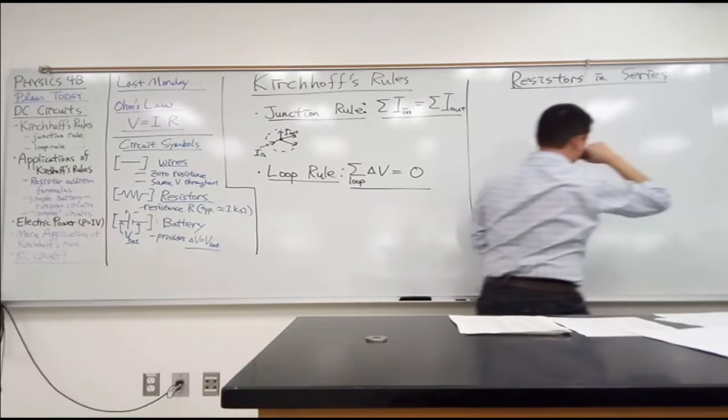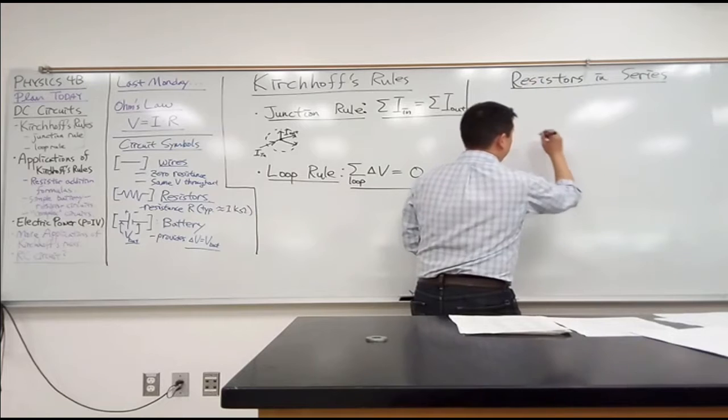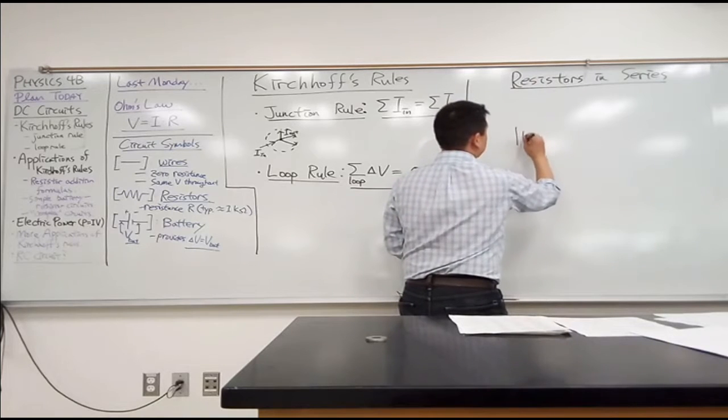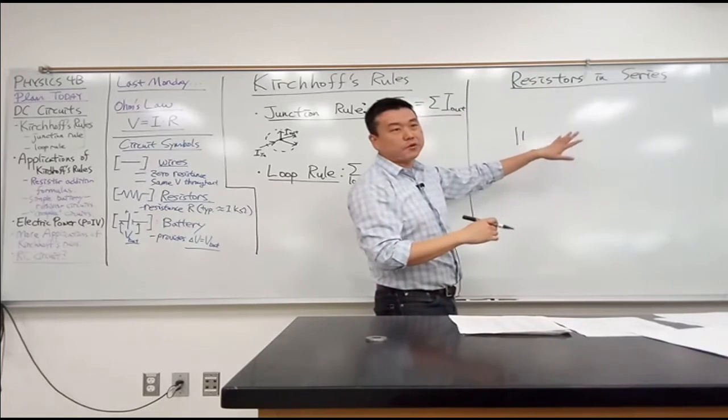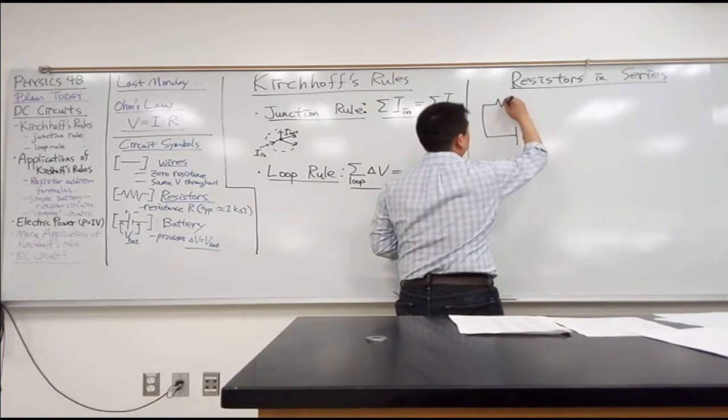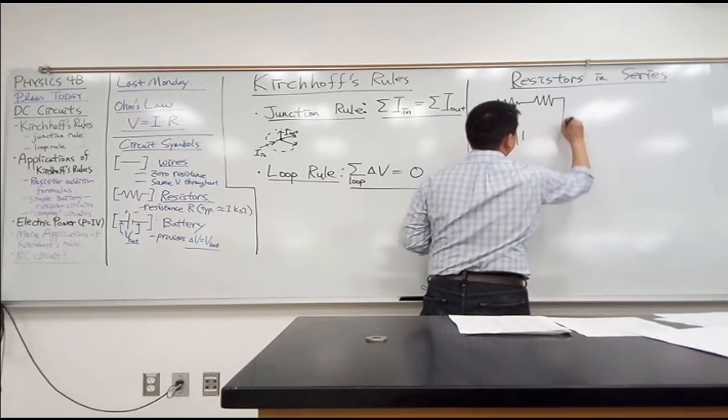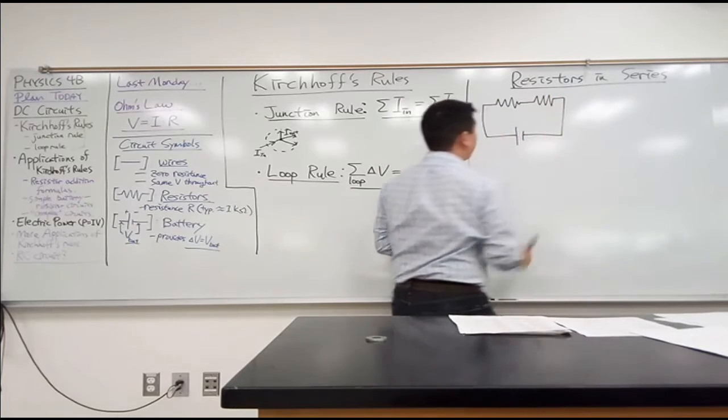It kind of looks like this. So I can have a battery here. I'm trying to draw it small so that I can use the rest of the space. Battery here, resistor here, another resistor right after that, and then comes back to the battery.